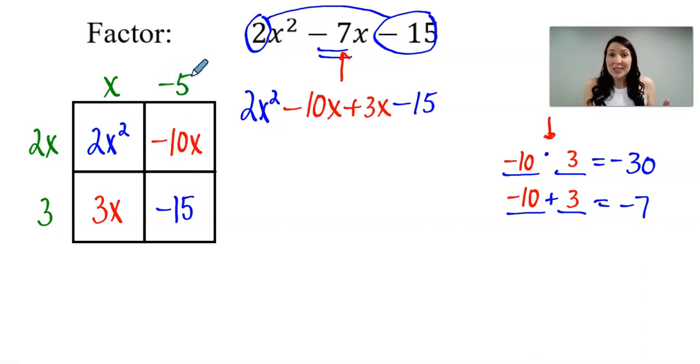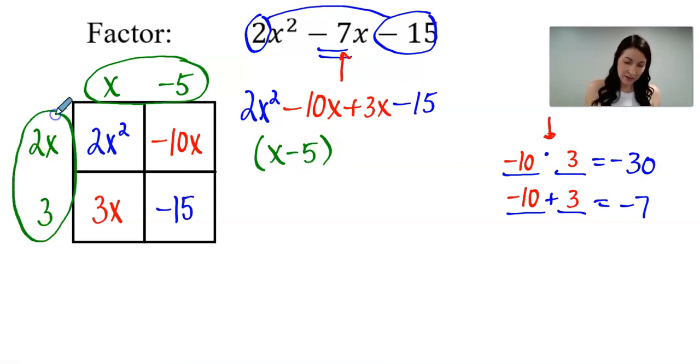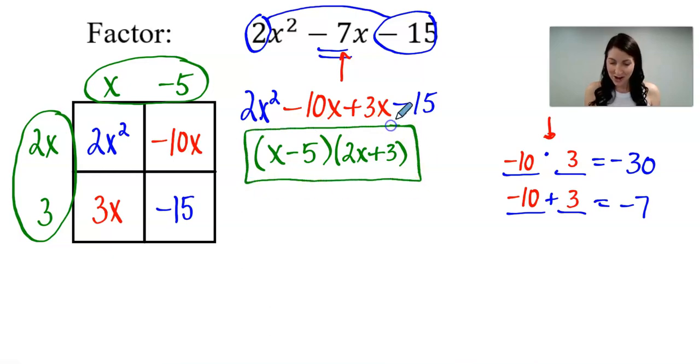And actually, our factors, we just read them off of our boxes. So up here on top, we have x minus 5. So that's going to be my first factor. And then over here on the right, I have 2x and positive 3. So 2x plus 3 is going to be my second factor. And that is how I factor 2x squared minus 7x minus 15.